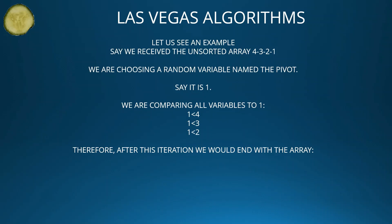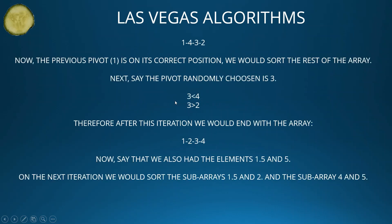Let's see an example. Say we received the unsorted array [4, 3, 2, 1]. We choose a random variable as the pivot — say it is 1. We compare all variables to 1: 4 is larger than 1, same as 3 and 2. Therefore, after this iteration, we end with the array [1, 4, 3, 2]. We haven't sorted the variables 4, 3, and 2 — we just put them to the right of 1 because 1 is lesser than all other variables. Now the previous pivot 1 is in its correct position, and we sort the rest of the array.